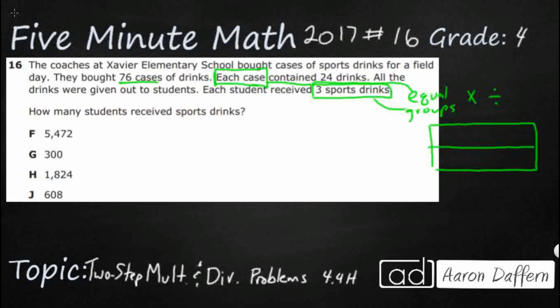So I'm going to put our unknown total up here — total drinks. These are going to be my cases. I'll draw some lines and an arrow to indicate 76. I'm not going to draw literally 76 little cases. Inside each of those cases I've got 24 drinks each. So I can skip count by 24 seventy-six times, or the easier way is to multiply: 24 times 76.